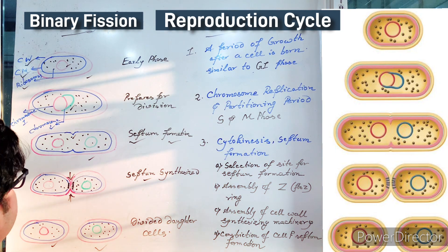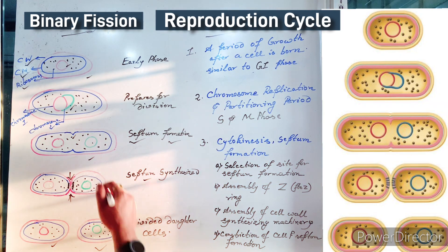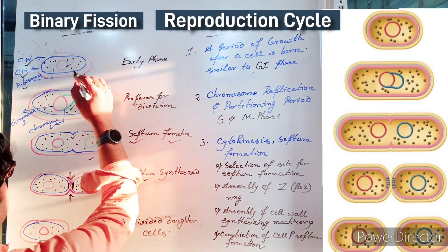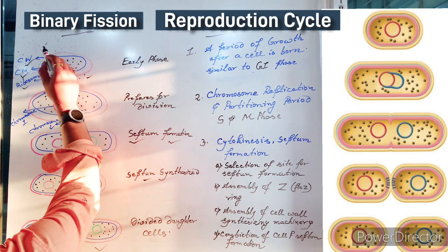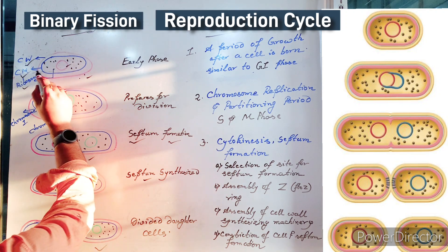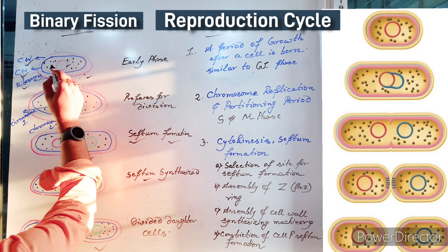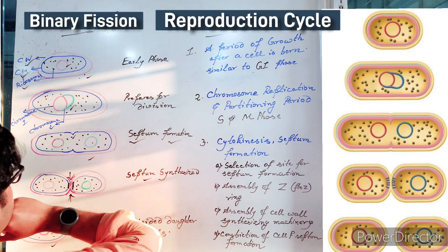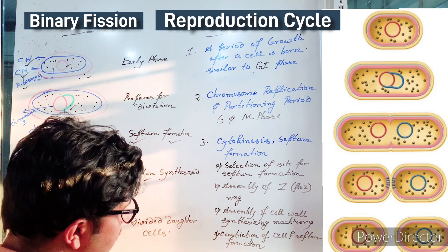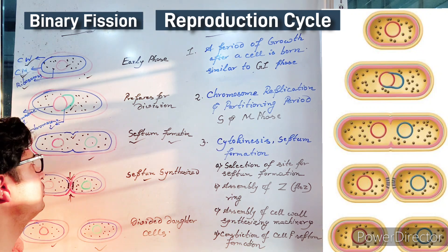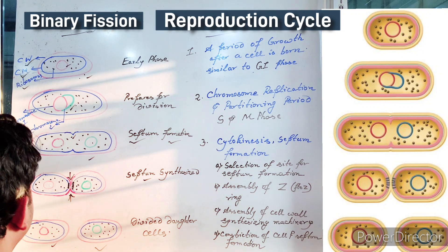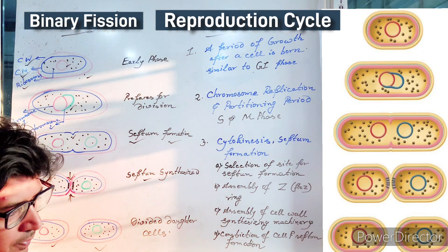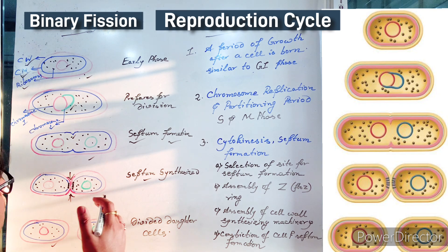Now coming to the primary and basic thing, that is binary fission. If you consider this as one bacterium, the red one is the cell wall, blue is the cell membrane, black dots are ribosomes, and in the center this is the nucleoid or the chromosome. In the early phase of their division or going through the binary fission process...